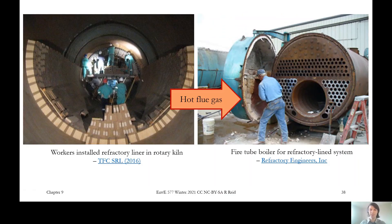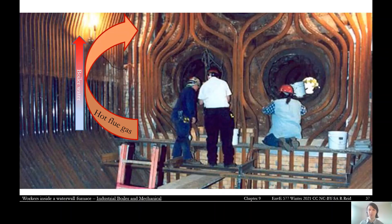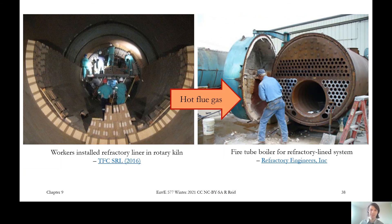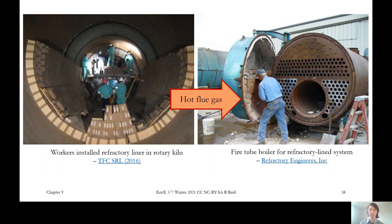In the refractory system, instead of pipes contacting hot gases in the reactor walls, the system is lined with refractory bricks. This is visible during maintenance on a rotary drum style incinerator. The actual boiler where heat is extracted from the flue gas is separate — all the energy comes out of the combustion chamber and goes into this external boiler, which has tubes doing the same job as those in the water wall, just in a separate unit. Most plants use the water wall system; the refractory system may be more suited to smaller mass burn plants.